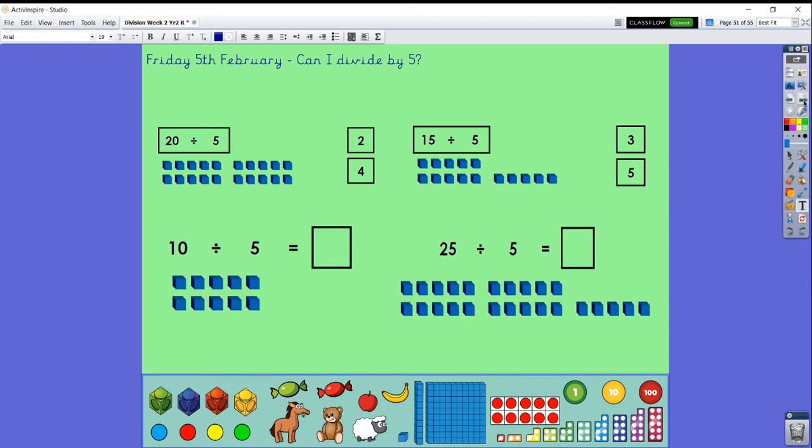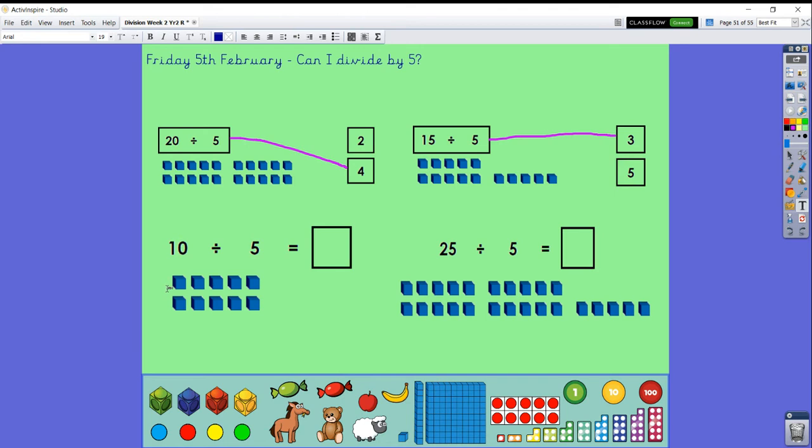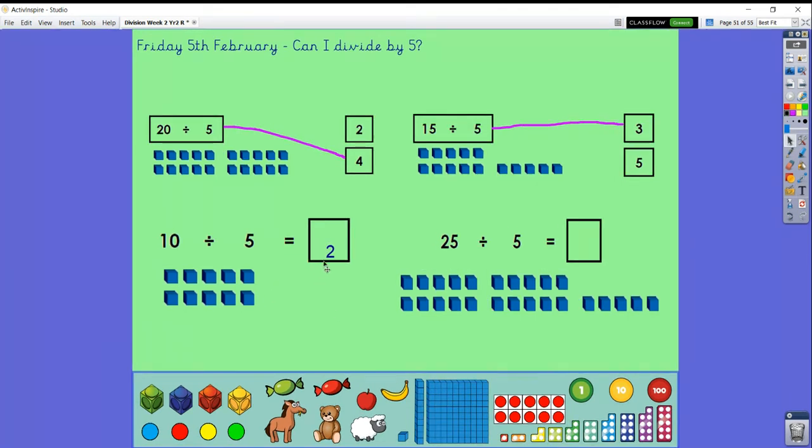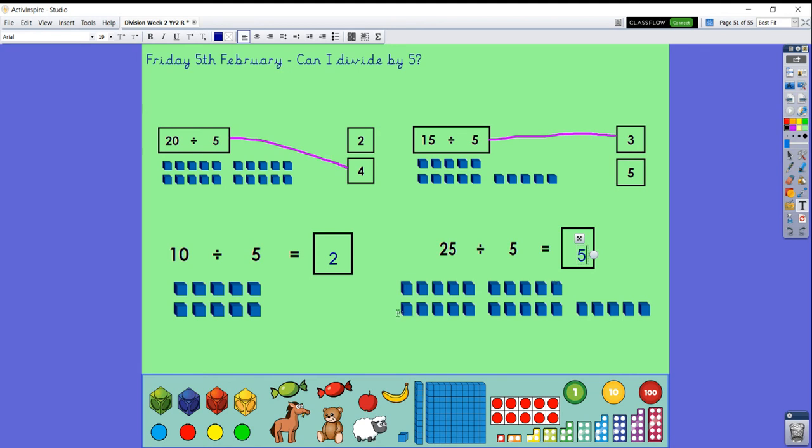So let's have a look. We've got some calculations here. Have a look at the pictures to help you. I wonder, which is the answer? Twenty divided by five. We've got groups of five here that will help you. Is it two or is it four? That's right. It's four. Twenty divided by five is four. Because we can see four groups of five. What about this one? Can you match it up to the right answer? Fifteen divided by five. I've got one, two, three. Okay, this time I need to fill in my missing boxes. Ten divided by five. So I've got one group of five, two groups of five. There we go. What about twenty-five divided by five? What did you get? I've got five. Because I've got one group of five, two groups of five, three groups of five, four groups of five, five groups of five.